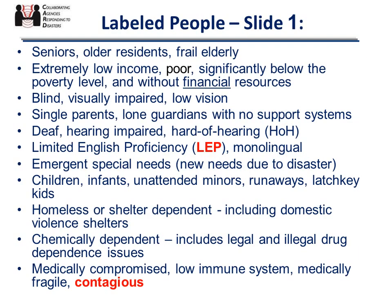Some of the communities we serve include seniors, low income individuals, visually impaired, people who are single, deaf, hard of hearing, limited English proficiency, children, homeless, chemically dependent, and medically compromised. Take a look and see if any of the people you serve are on this list. We also serve people with physical disabilities, cognitive or developmental disabilities, and there are cultural and religious considerations — the way you give a preparedness message can vary significantly by community.